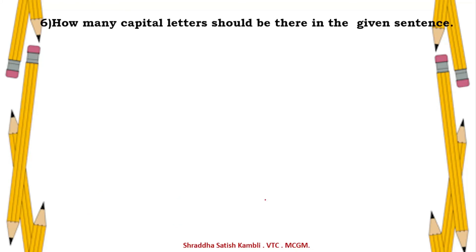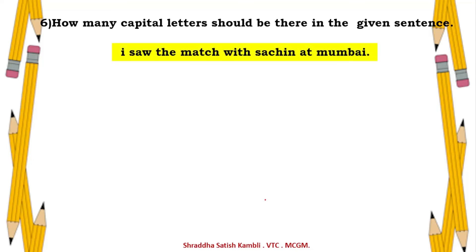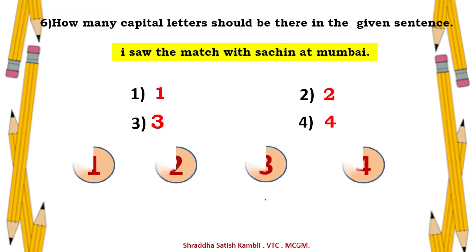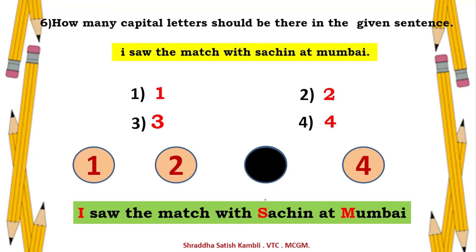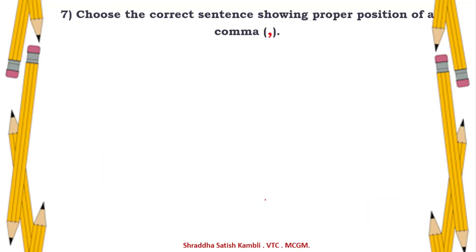Sixth example: how many capital letters should be in the sentence 'I saw the match with Sachin at Mumbai'? The answer is option 3 — three capital letters: capital I for the pronoun, capital S for Sachin, and capital M for Mumbai.